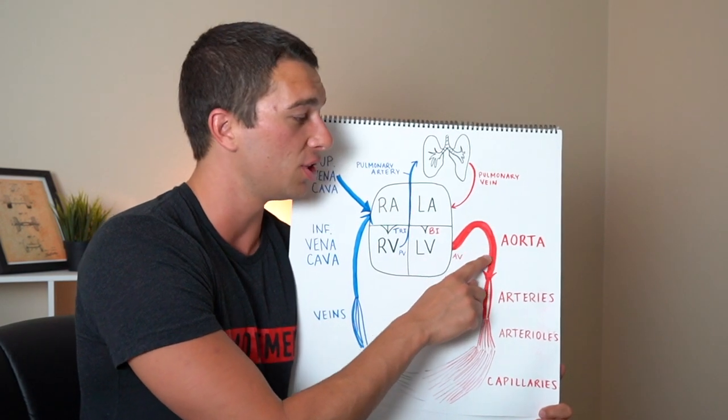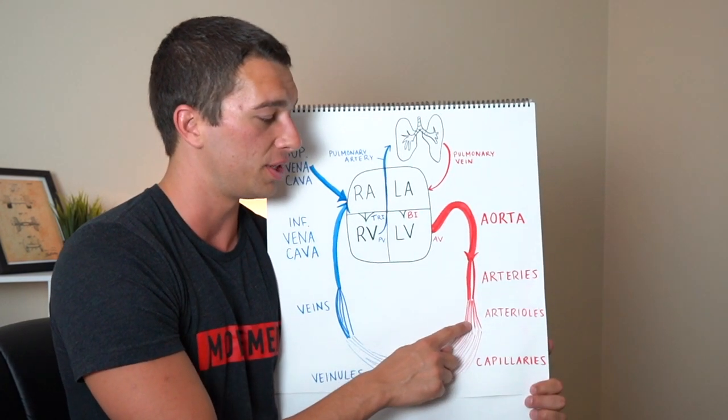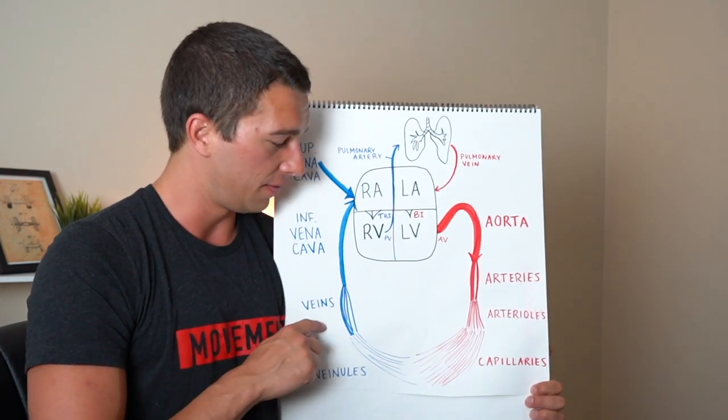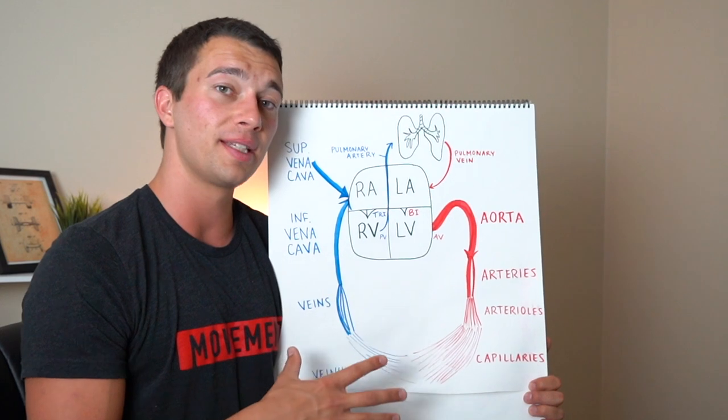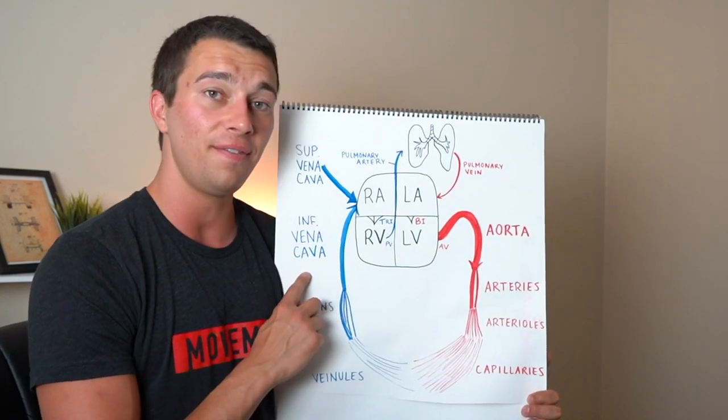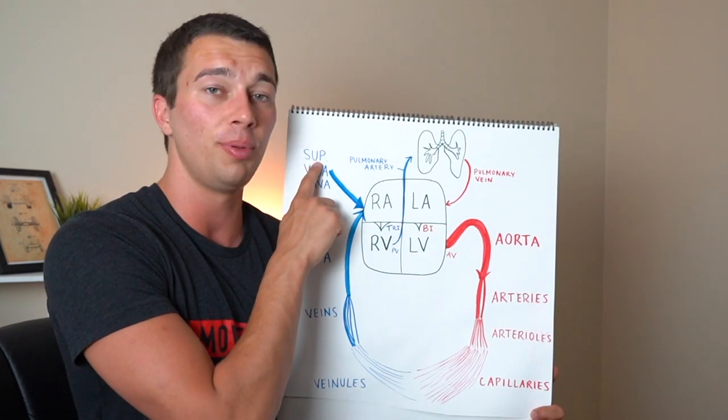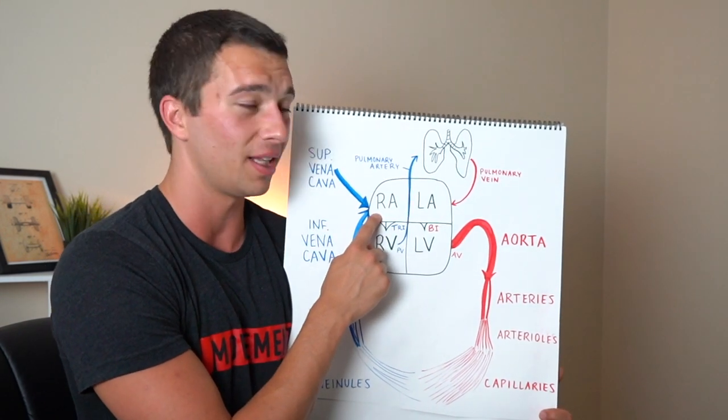And then just to make the connection here it's going to go down through the arteries, through the arterioles, through the capillaries, up through the venules, the veins, into the vena cava. If the blood's coming from the body it's going to be from the inferior vena cava or if it's from the brain or above the neck it's going to come from the superior vena cava back to where we started at the right atria.